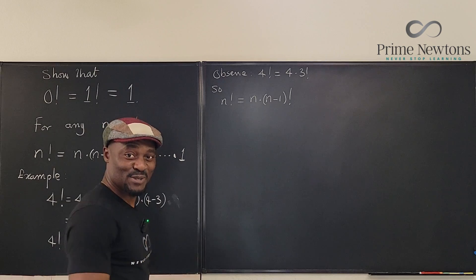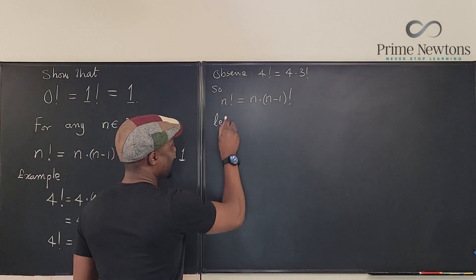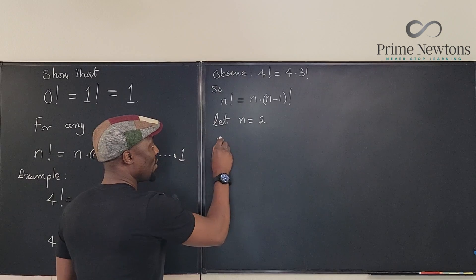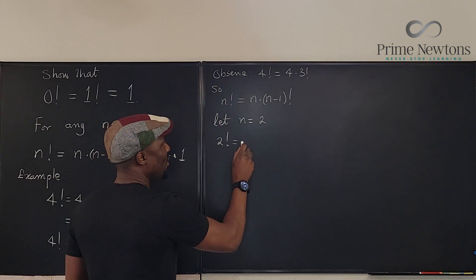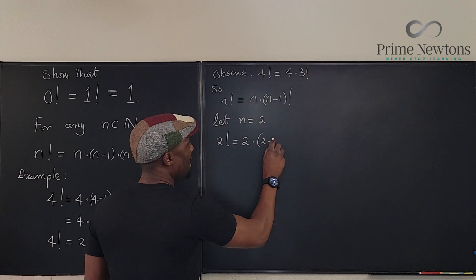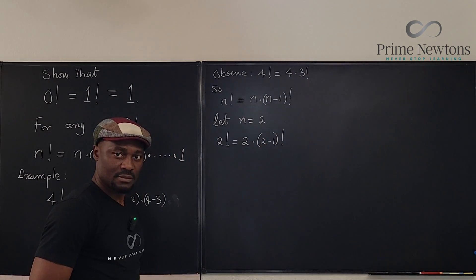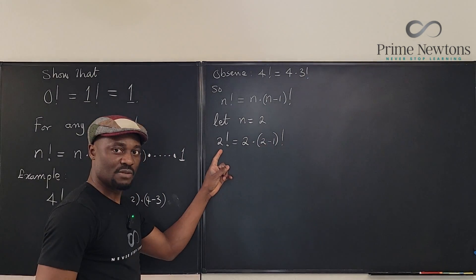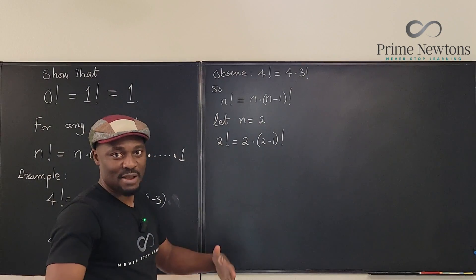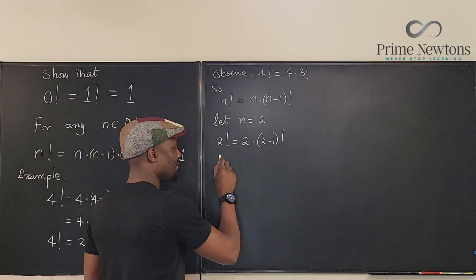So now let's choose n to be 2. Let n be equal to 2. It's a natural number. We know that 2 factorial will be, if we do this, it's going to be 2 times 2 minus 1 factorial. What is 2 factorial? It's just 2 times 1, right? Which is 2.